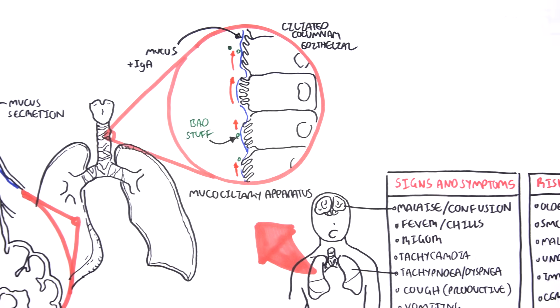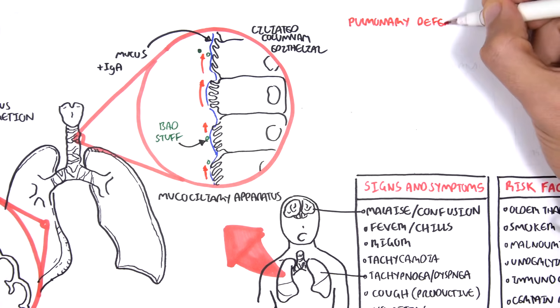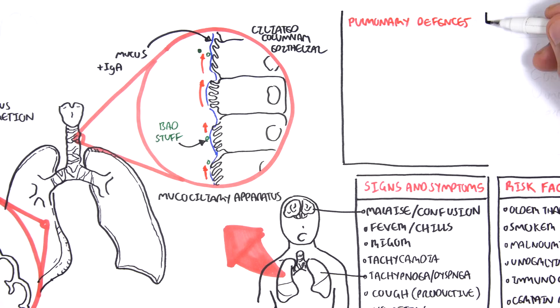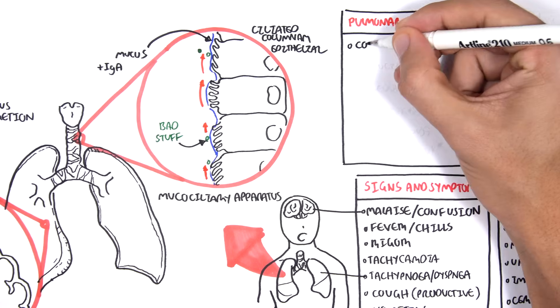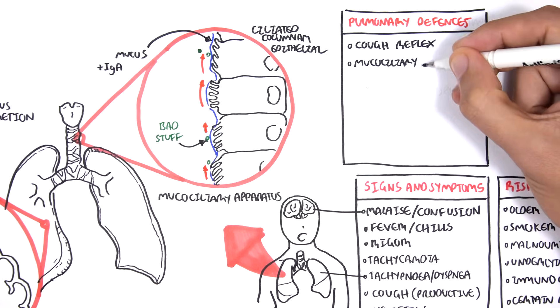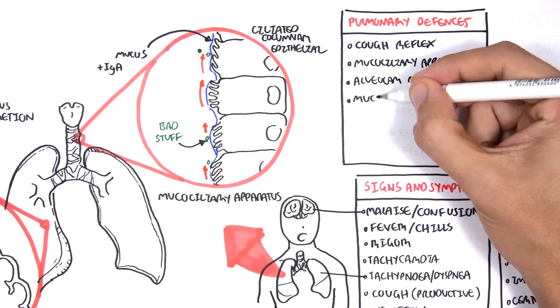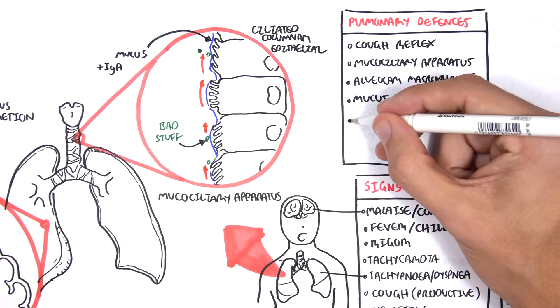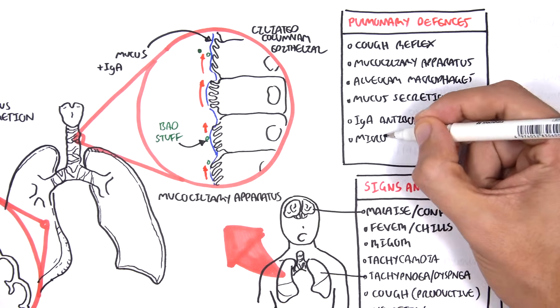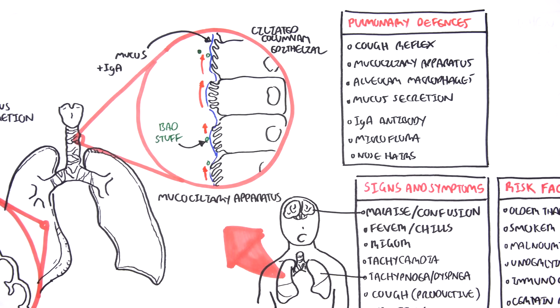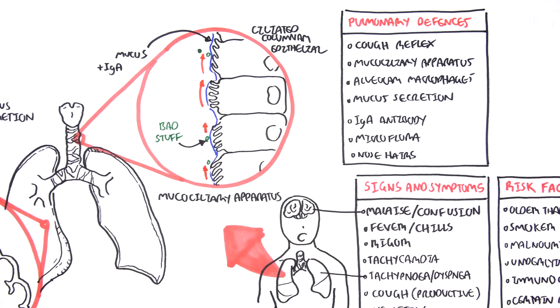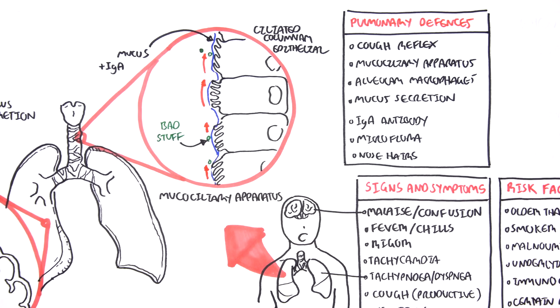So if we were to summarize our pulmonary defense mechanisms, they include the cough reflex, the mucociliary apparatus, the alveolar macrophages, mucus secretions, IgA antibodies as well as the microflora of the upper respiratory tract and the nose hairs, our nose hairs and mouth acidity if you want to include that as well.